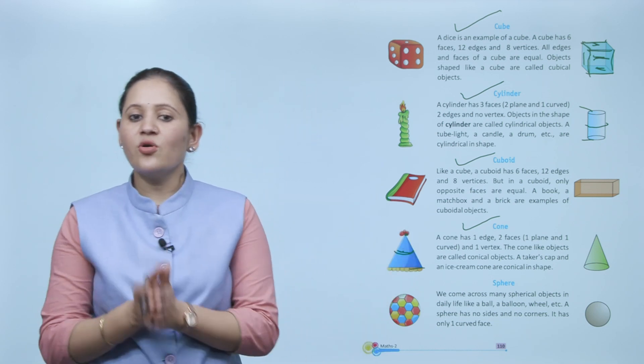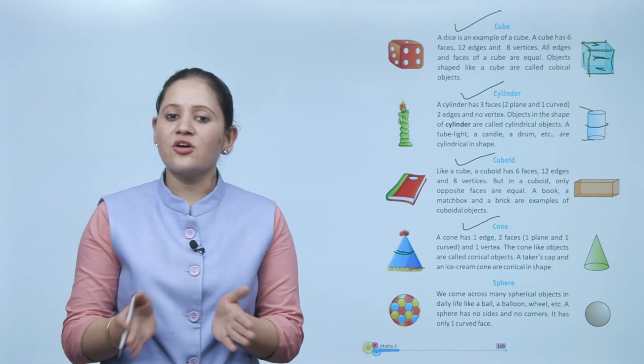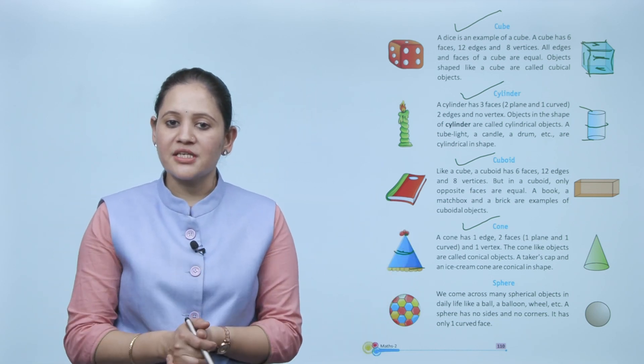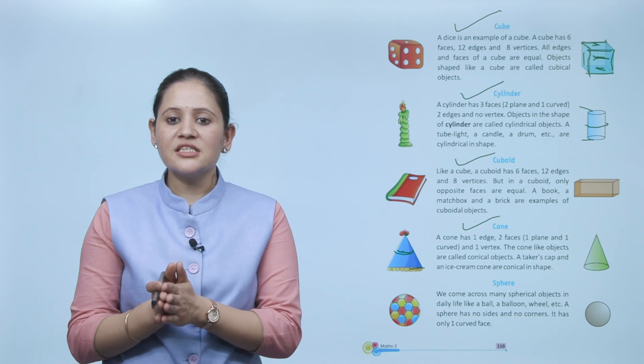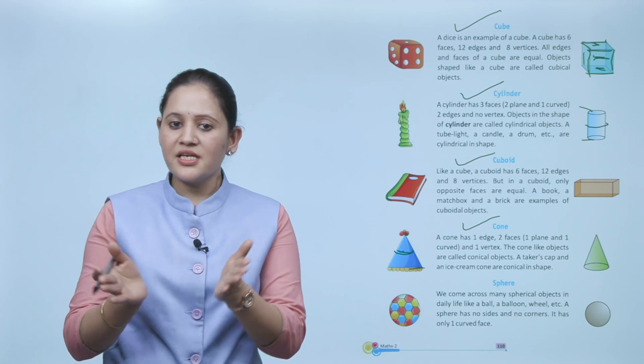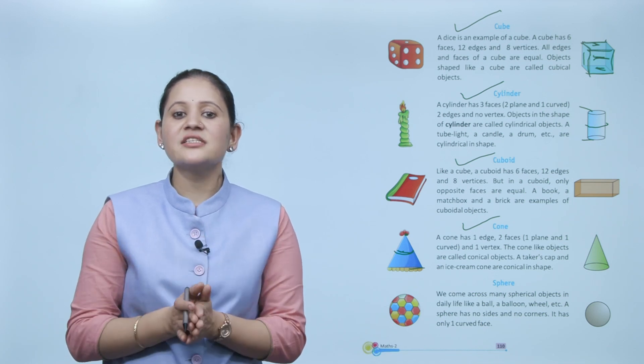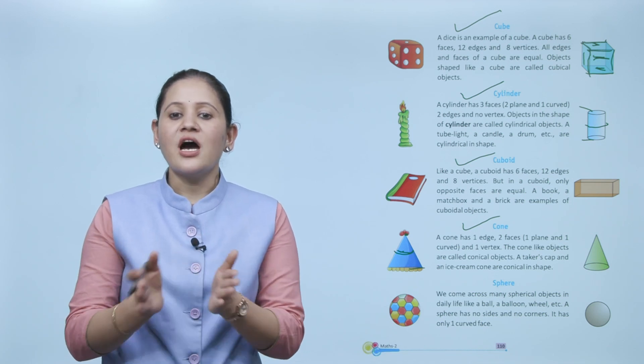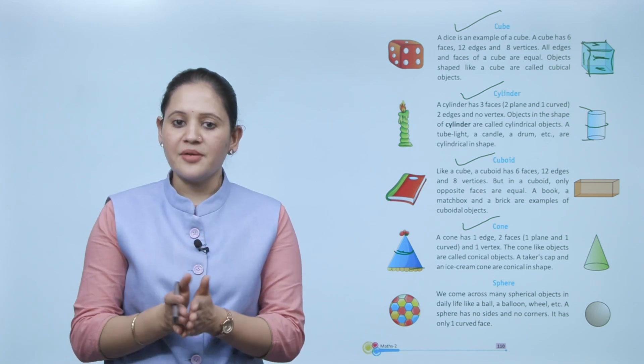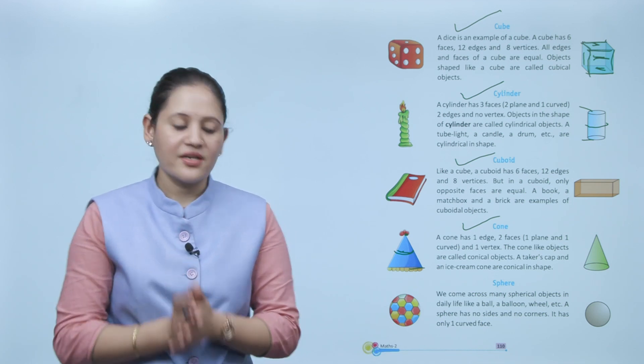Conical objects are called conical objects. A traffic cone, birthday cap, and ice cream cone are conical shapes. Next: sphere.